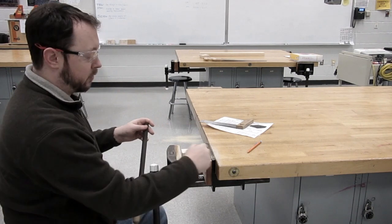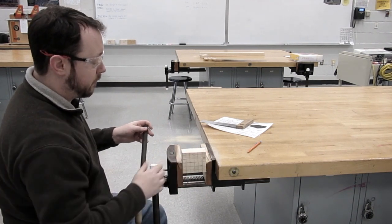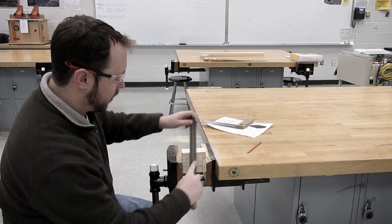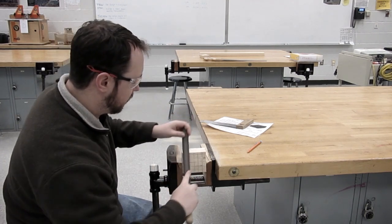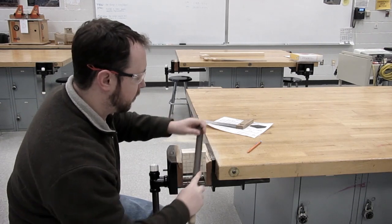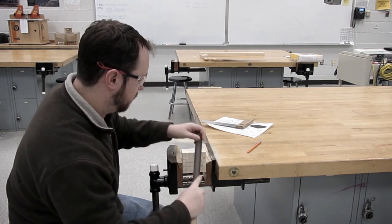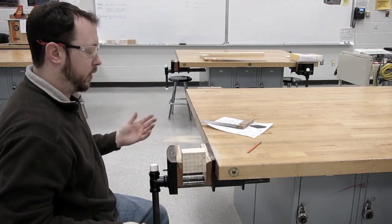When you're going across the grain, and the grain is the lines running in the wood, it tends to be a lot easier than going against it, like when we did the end here. This side should be much easier and faster. It's already done.